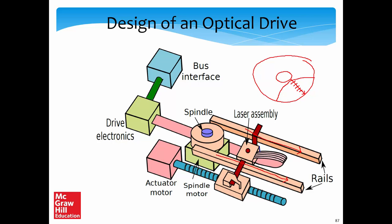Even though the recording is different, sectors and tracks are organized in a different manner — details are in the book. After deciphering the bits, data is sent via an electrical channel to the electronics of the drive, which does the framing, puts it into packets, and sends it over the bus to the CPU or memory.